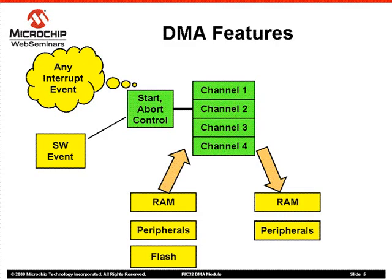You can program the DMA to read data from RAM, flash, or any of the peripherals and write to RAM or peripherals. As the DMA operates on data, it can also calculate a 16-bit CRC. The CRC engine is a programmable module — you can specify a 16-bit polynomial of your choice. With respect to CRC, the DMA provides two modes of operation: one, transfer data and calculate CRC at the same time; or two, calculate CRC on a block of data without transferring any data.